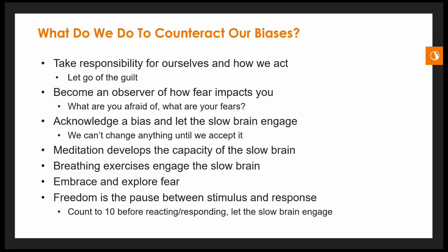Acknowledge a bias and let the slow brain engage. We can't change anything until we accept it. If we don't take the first step of acknowledging and understanding our biases, we have no hope of overcoming them. Two things Ross suggests for getting that slow brain to work are meditation and breathing — before a big meeting, an interview, reviewing a report, or making consequential decisions, practice meditation or breathing exercises. That will engage the slow brain and help counteract the fast brain from over-influencing our decisions. Embrace and explore fear — dig into what's making you uneasy or fearful and see if there's really something underlying a particular situation.